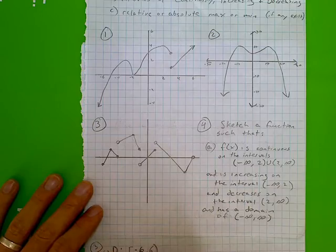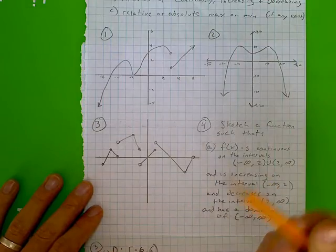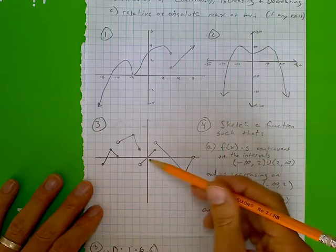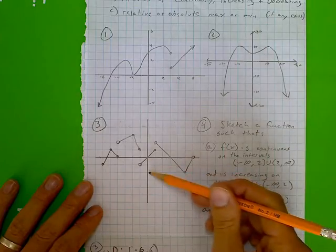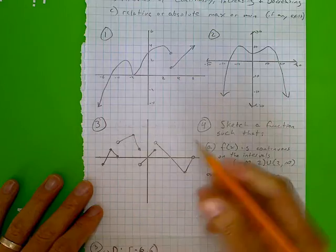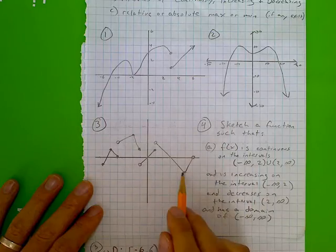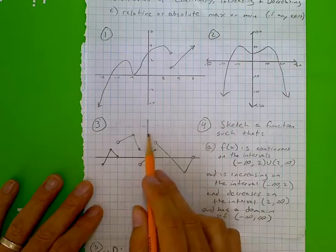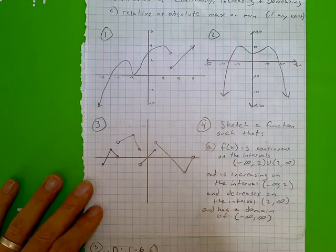What about the range? The lowest y-value would be negative 2, included because there is actually a point that has that y-value. And the highest y-value is positive 3, also included.